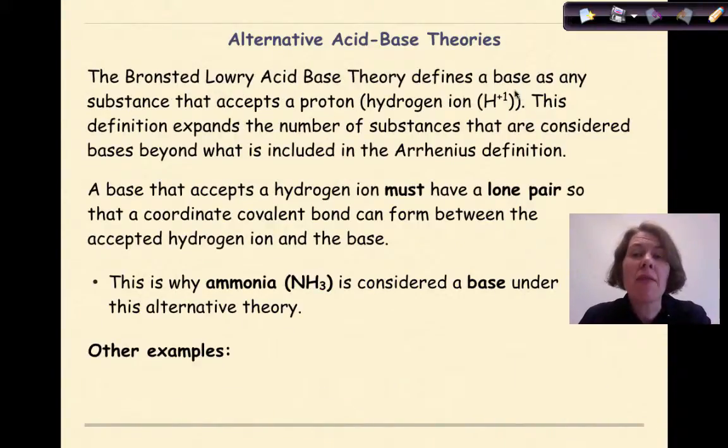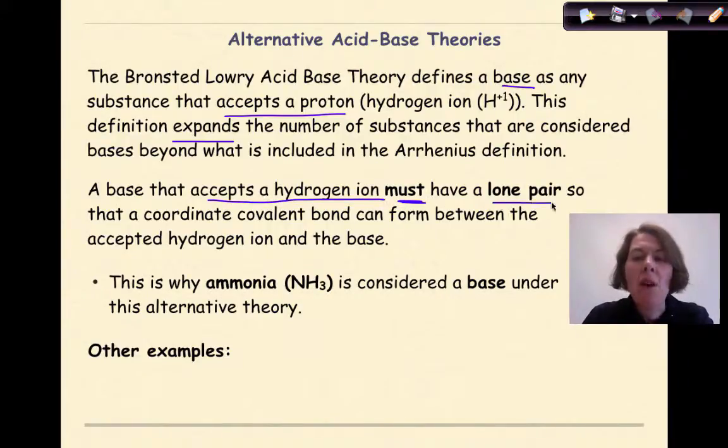The Bronsted-Lowry base theory defines a base as any substance that accepts a proton, a hydrogen ion. This definition expands the number of substances that are considered bases beyond what is included in the Arrhenius definition. A base that accepts a hydrogen ion must have a lone pair, so that a coordinate covalent bond can form between the accepted hydrogen ion and a base.